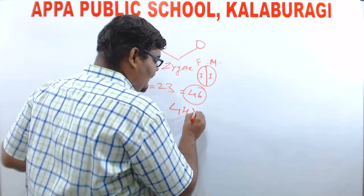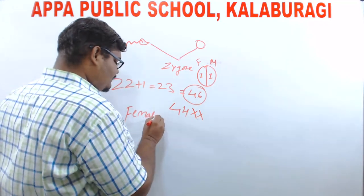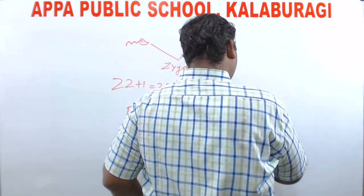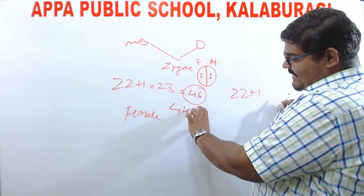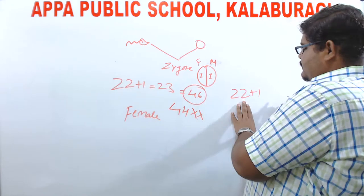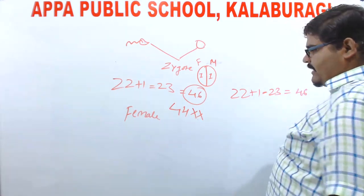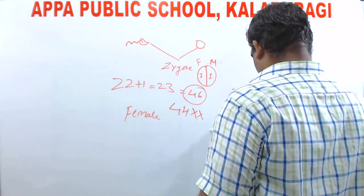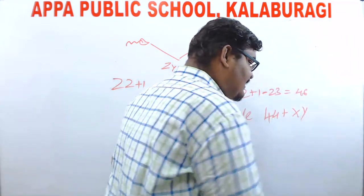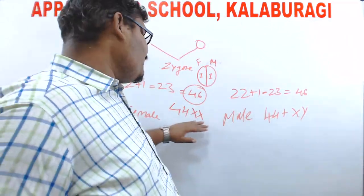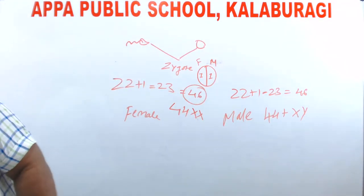XX denotes the sex chromosome in females — 44 body chromosomes plus XX. In case of males, it is 44 plus XY. XY is the sex chromosome in males, whereas in females it is XX. This we are going to learn under the heading of sex determination.